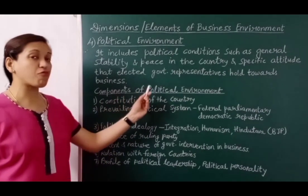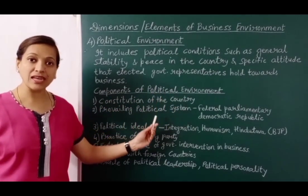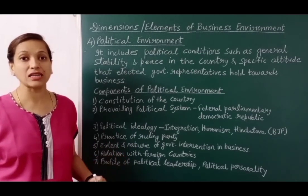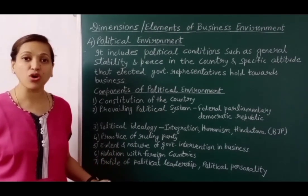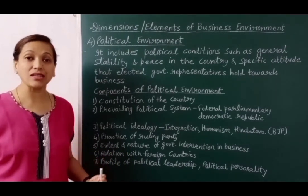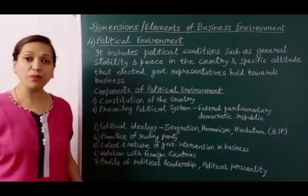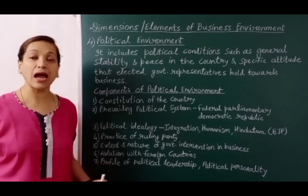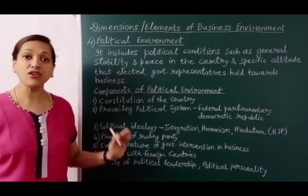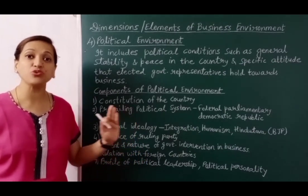Now we learn the components of political environment. The first is the constitution of the country. In 2019, the Modi government removed Article 370 of the constitution from Jammu and Kashmir. Now Jammu and Kashmir will have no separate constitution or separate flag — it will be the same as other states of India. Jammu and Kashmir was also declared two union territories. Now any Indian citizen can purchase land or property there and set up business projects, which will increase business organizations, employment, and improve economic conditions.